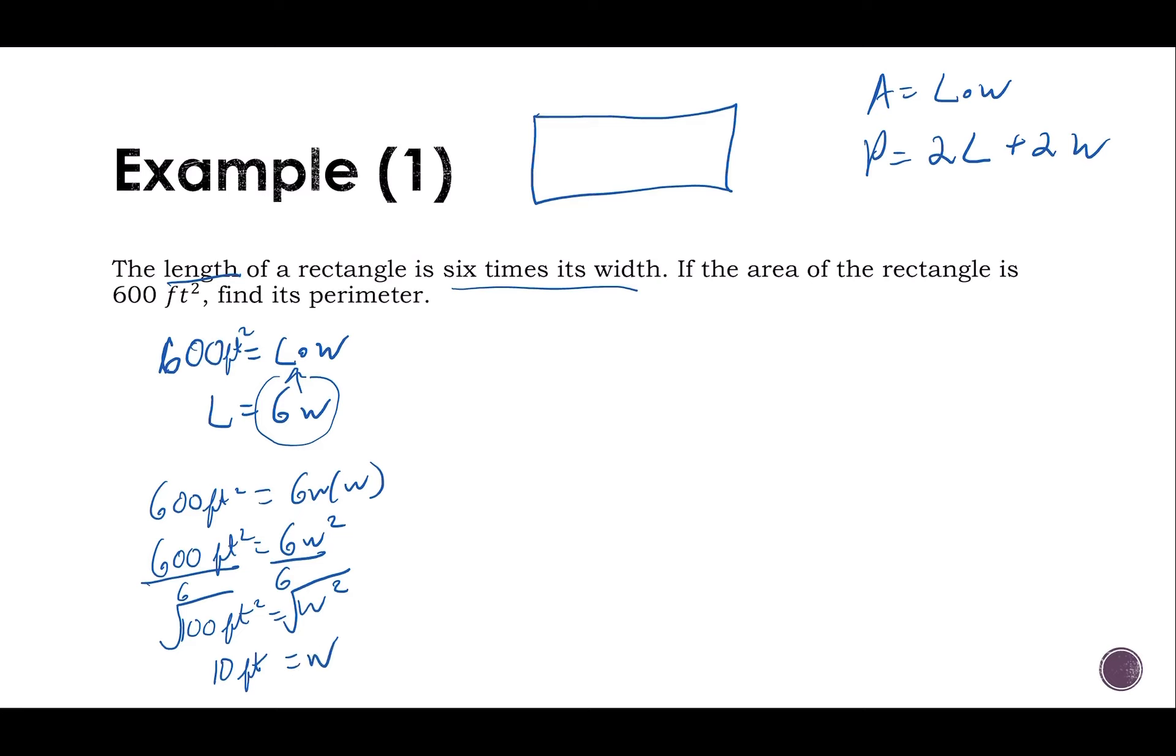So I now know my width, but I need to find my length. Well, my length is six W. So length is six W. So my length is six times 10 feet. That means my length is 60 feet.